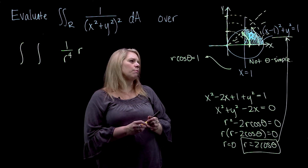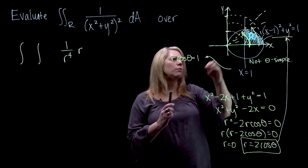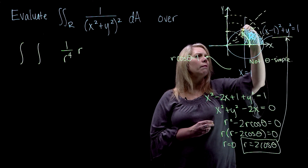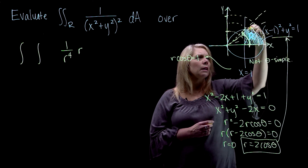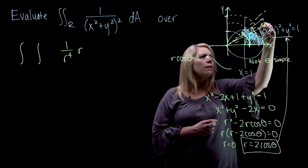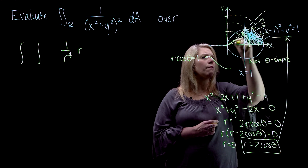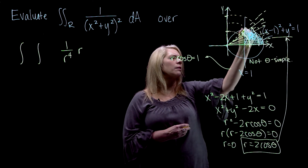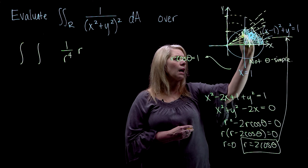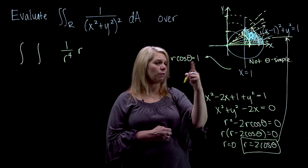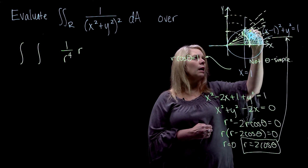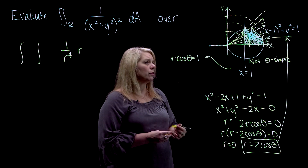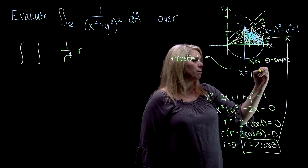This region is r simple. If I start at r equals 0 and go outward from the origin along any constant theta value — except exactly pi over 4, which goes through the vertex point — I always enter along the line x equals 1, which is r cosine theta equals 1, and I always leave through the circle r equals 2 cosine theta. So this region is r simple.